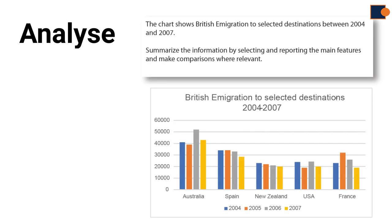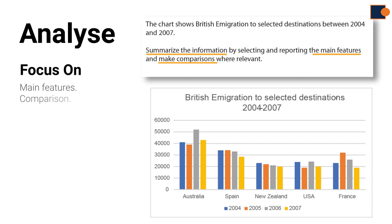Part 1: Introduction. Once you have opened the question booklet, you have to quickly analyze the question rubric and given diagram. To do this, focus on the task requirements written in the rubric. It says: summarize information by selecting and reporting the main features, and make comparison where relevant. It means your main focus should be the main features and making comparisons.